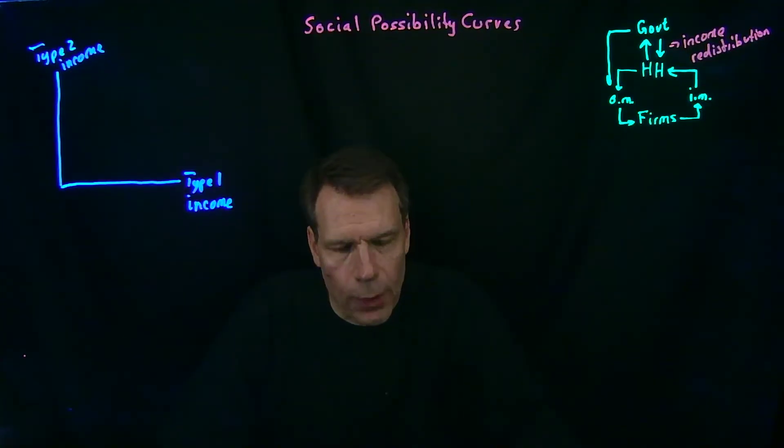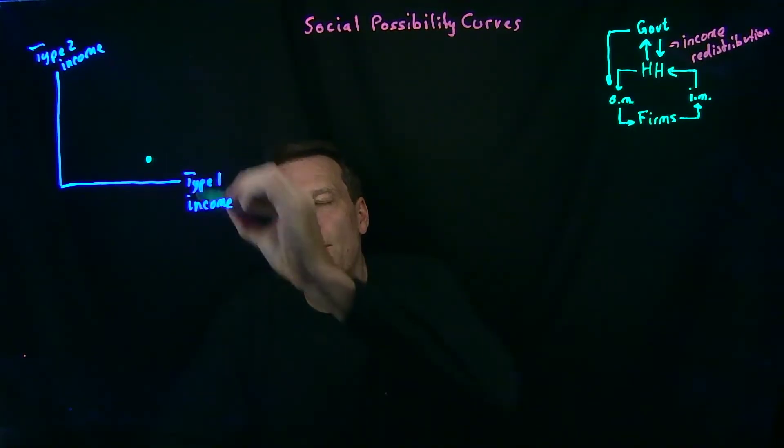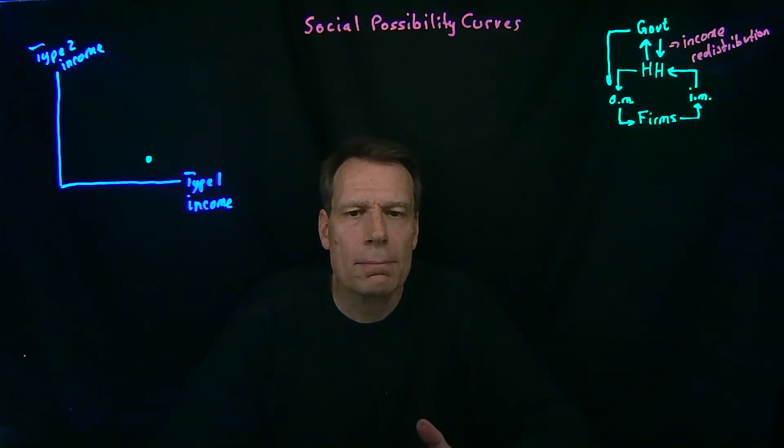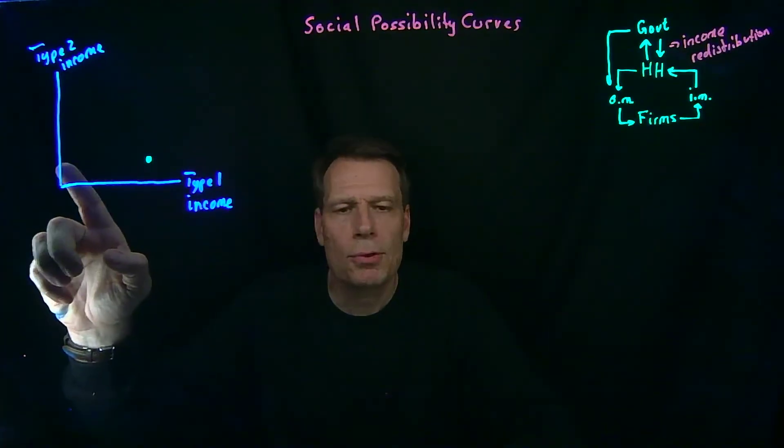And we'll start with the point that the economy will take us to if we do nothing. If we don't redistribute any income, we might end up at a point like this, where the economy simply channels resources to the two types. So in this case, type 1 people would have a lot more income than type 2 people.